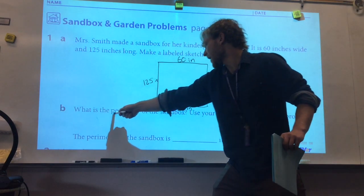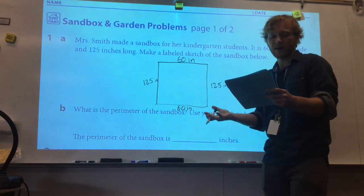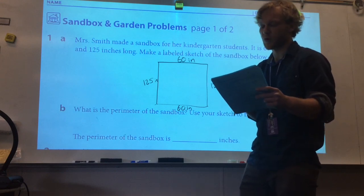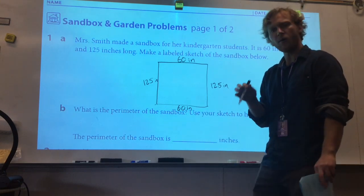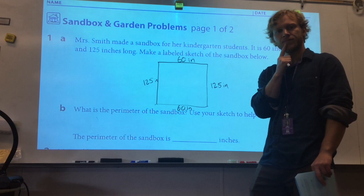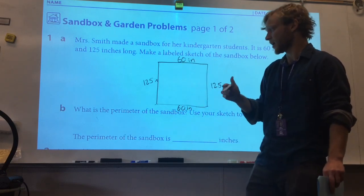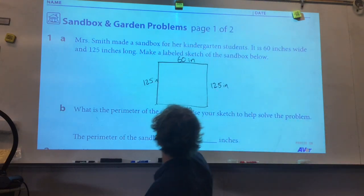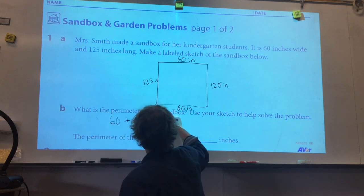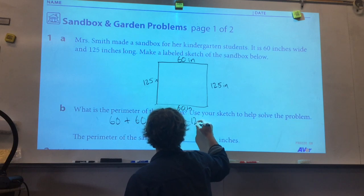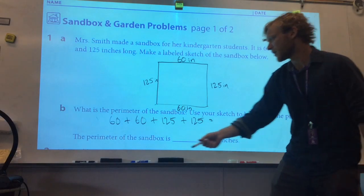Step 2. We need to find the perimeter of the sandbox, and we're going to use our sketch to help us solve the problem. ¿Cuál es el perímetro del aranero? Usa tu dibujo para ayudar a resolver la problema. So just like we did in our example problem, how are we going to find the perimeter, mathematicians? That's right. We need to add up all of our side lengths. So our equation will probably look like this: 60 plus 60 plus 125 plus 125 equals, and our total there will be our perimeter of the sandbox.